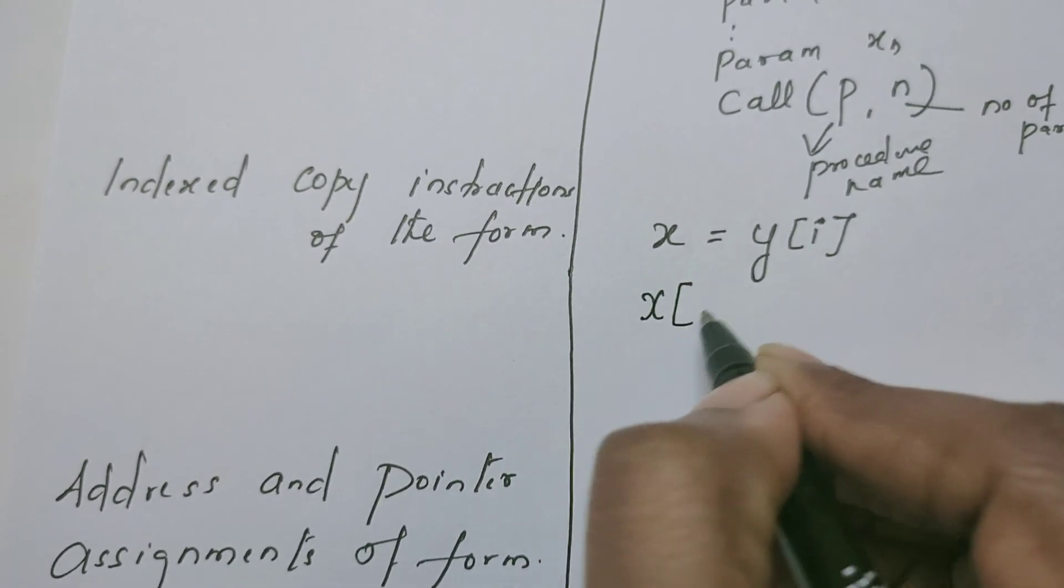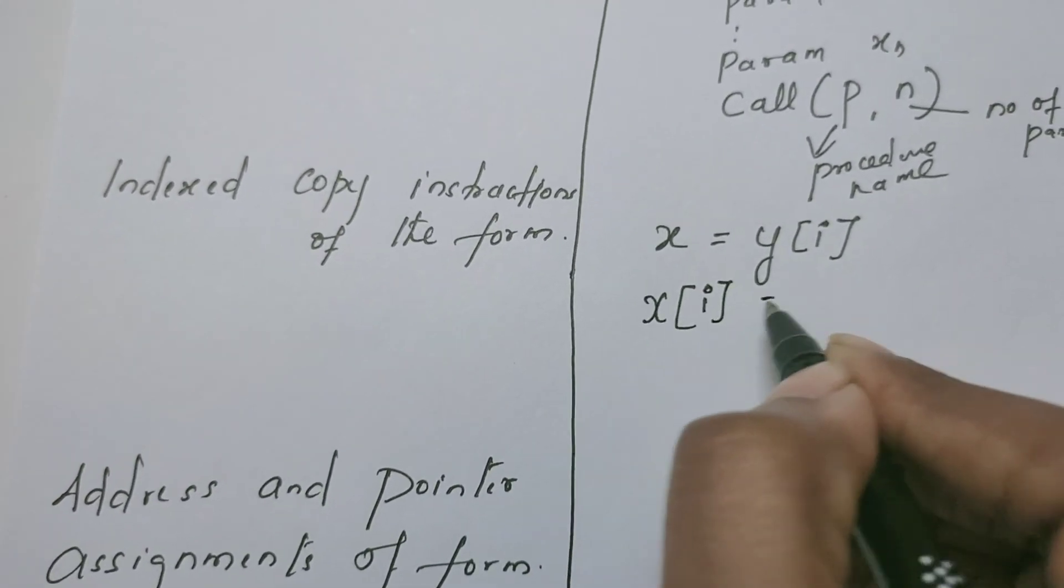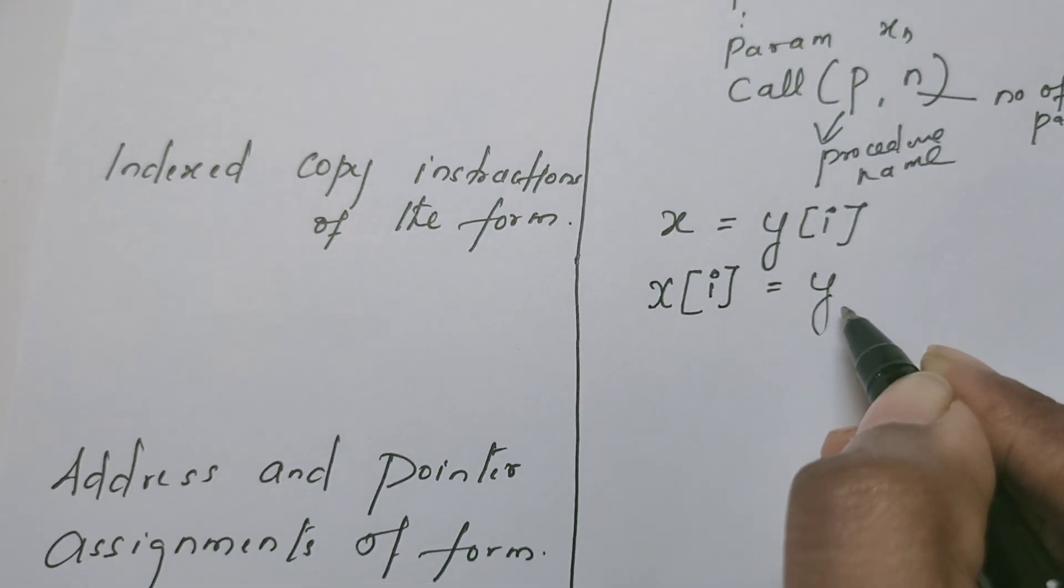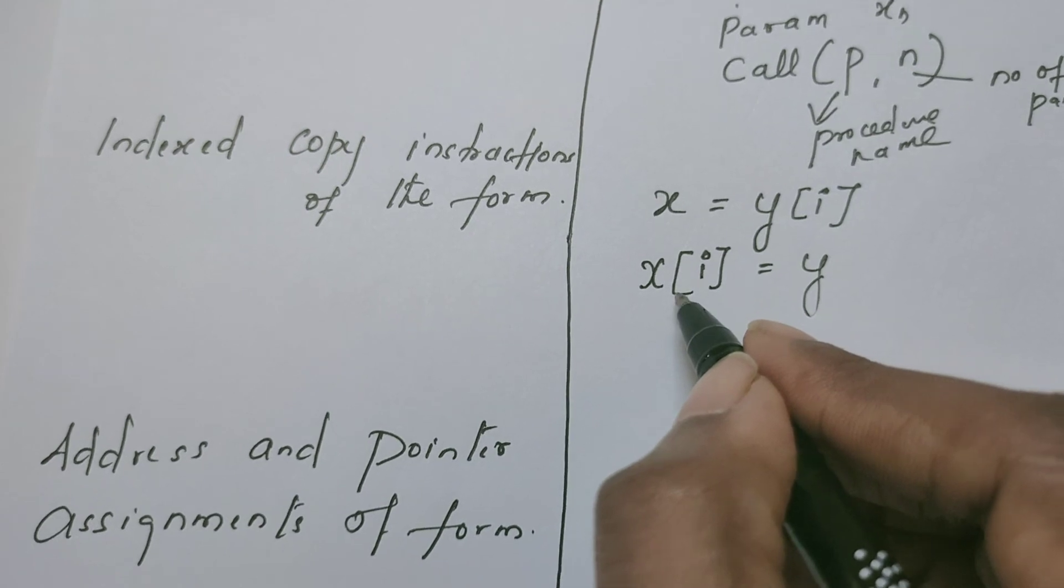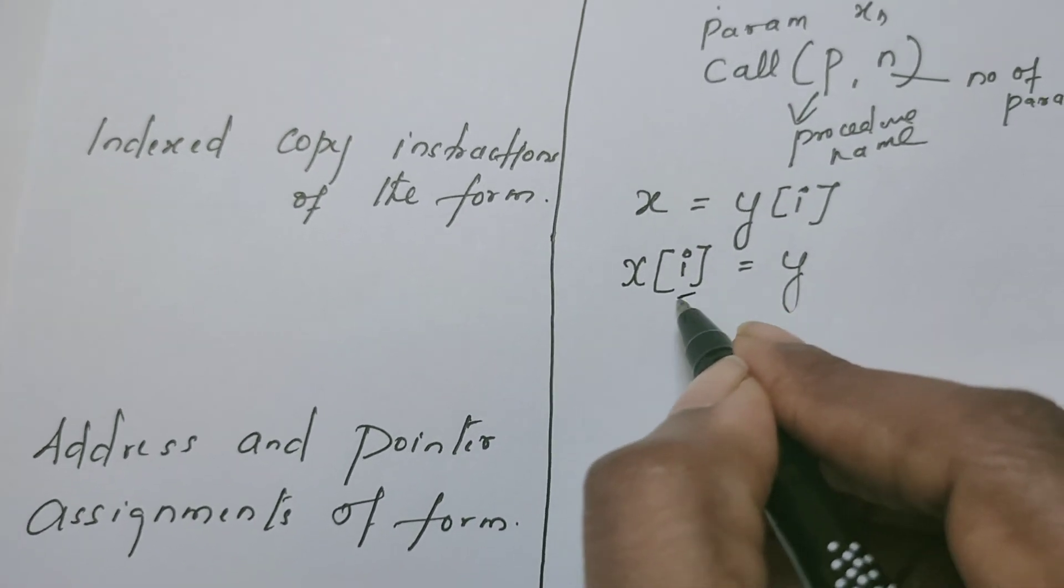We can have statements like this also: x of i is equal to y. The value at the location y is being sent to x, which is away from the location i. It is the index.